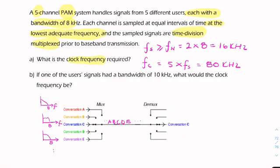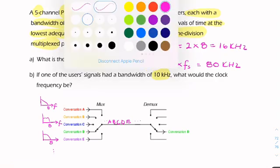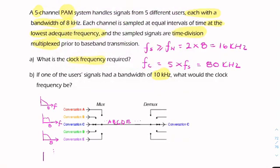Now in part B, we're told that one of the signals has a higher bandwidth. So let's say one of the signals, let's say the last one, E, had a greater bandwidth of 10 kHz.